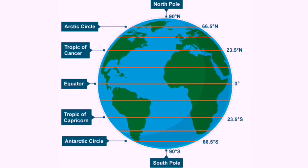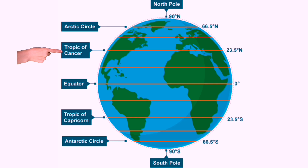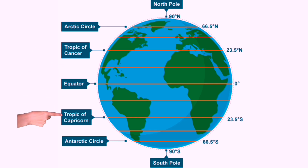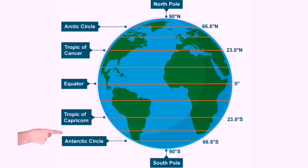These are the five major latitudes with special names. The equator is at zero degree latitude. The Tropic of Cancer is at 23.5 degrees north, while the Tropic of Capricorn is at 23.5 degrees south. Above the Tropic of Cancer, the Arctic Circle is at 66.5 degrees north, and the Antarctic Circle is at 66.5 degrees south.